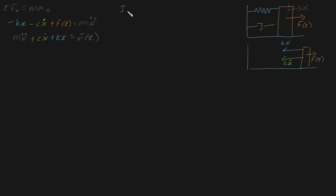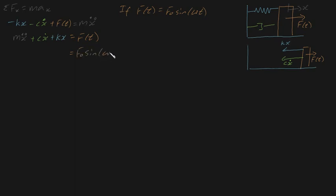Let's put these negatives over to the right-hand side to make them positive, and what we'll get is: m times the double derivative plus cx-dot plus kx must be equal to our force, which is a function of time acting on our block. Now, if f of t is equal to F₀ sine omega t, then we can actually find the particular solution of this quite simply. This is only true if our force is sinusoidally varying, so for some time it'll be acting to the right, and then for some time it'll be acting to the left, etc.